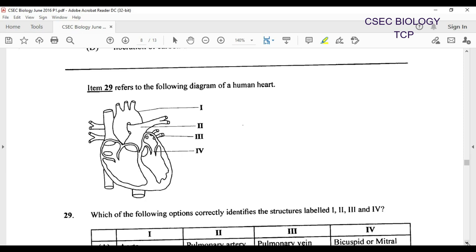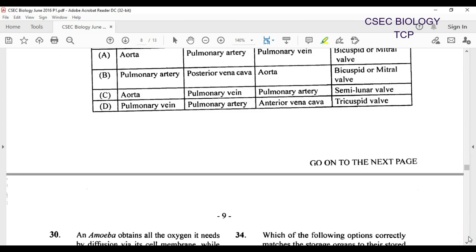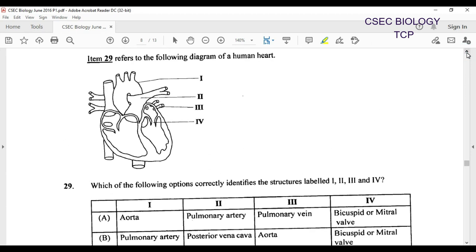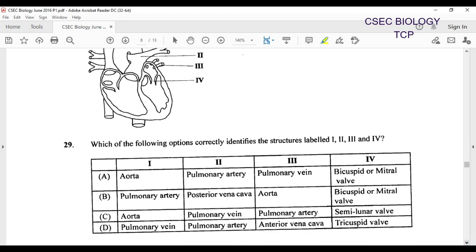I will move on down to the heart which is 29, and it refers to the following diagram of the human heart. It is nicely labeled: one with the aorta, and two there being the pulmonary artery. Then we have the pulmonary vein, and then we are going to be having the bicuspid valve or mitral valve. This is going to be pretty much straight from the textbook. So if you remember the textbook you should be fine here.